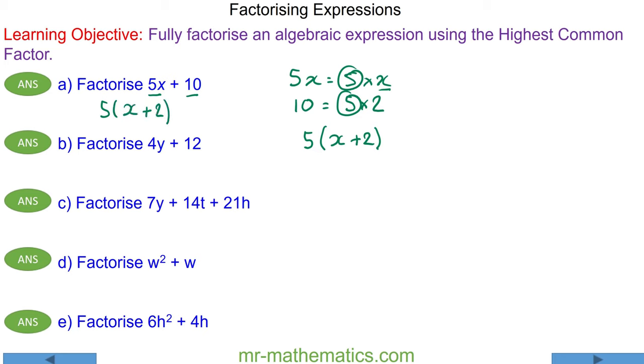For question B, we have 4y, which is a product of 4 and y, and 12, which is a product of 4 and 3. You can see that 4 is the highest common factor of both terms. So 4 goes on the outside, and we have y plus the 3 on the inside of the brackets.